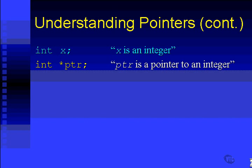Now, if you read the line int star ptr, I say ptr is a pointer to an integer. That's what I say to myself when I see the asterisk. And that's what you guys have to get used to saying to yourselves as well when you see that asterisk.